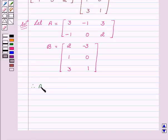Therefore AB equals 3 into 2 plus minus 1 into 1 plus 3 into 3, and 3 into minus 3 plus minus 1 into 0 plus 3 into 1.